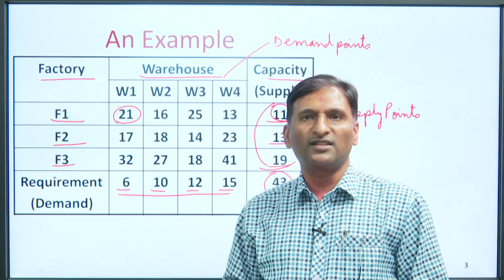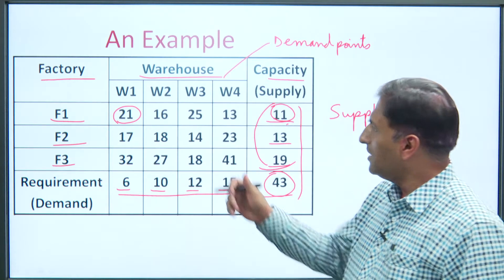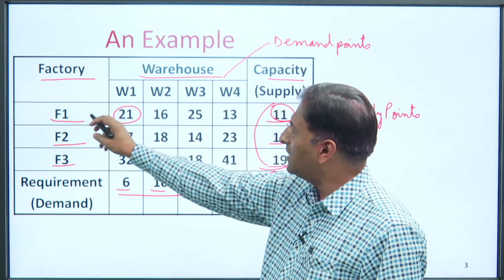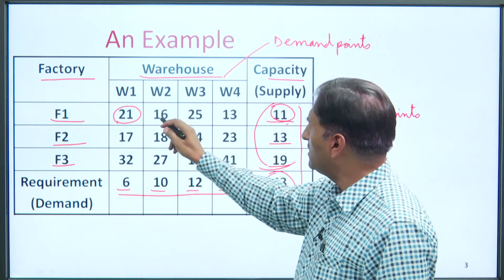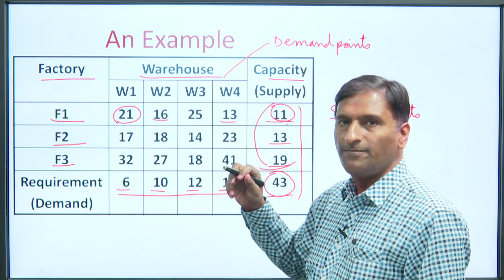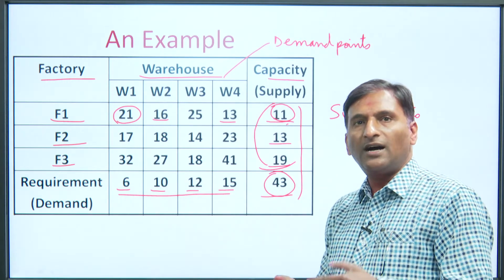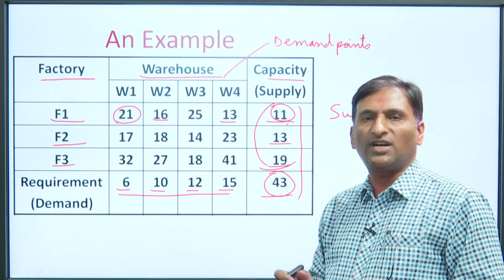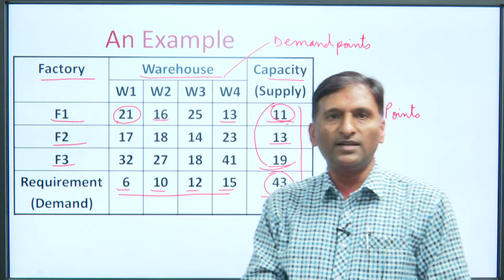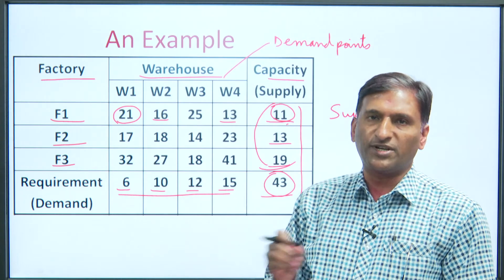The only consideration is the total cost. If we send from F1 to W1 it costs 21 rupees per unit; from F1 to W2 it costs less; from F1 to W4 it costs less. So the objective is: how many units should be sent from where to where so that the total transportation cost is minimized — this is the transportation problem's objective.